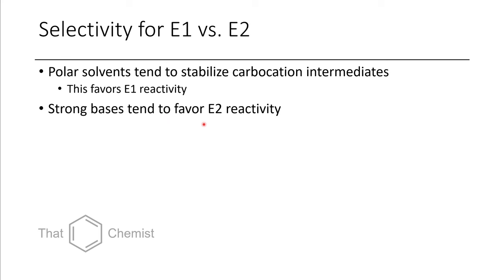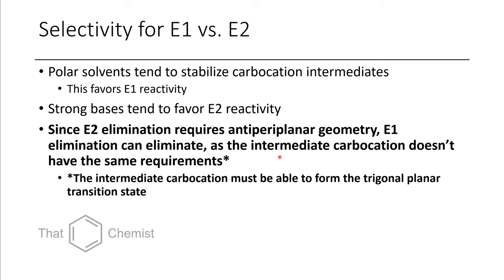And so the other thing to consider is if you're trying to do an E2 elimination with a strong base, but it isn't going, it could be because you don't have an antiperiplanar geometry. So just like the practice problem we talked about earlier, where we had a proton that was anti to the leaving group, if we were trying to do an elimination for the other chloride, where we had a syn relationship between the leaving group and the proton, we would need to go through an E1 type elimination if we wanted to eliminate that one instead.